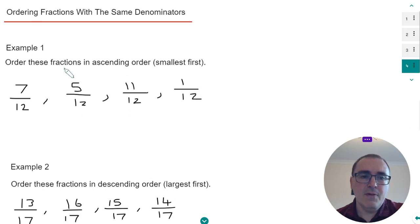So in example one, we've got to order the fractions in ascending order. This means we need to start with the smallest fraction and go up to the largest fraction. So we've got 7 twelfths, 5 twelfths, 11 twelfths, and 1 twelfth.